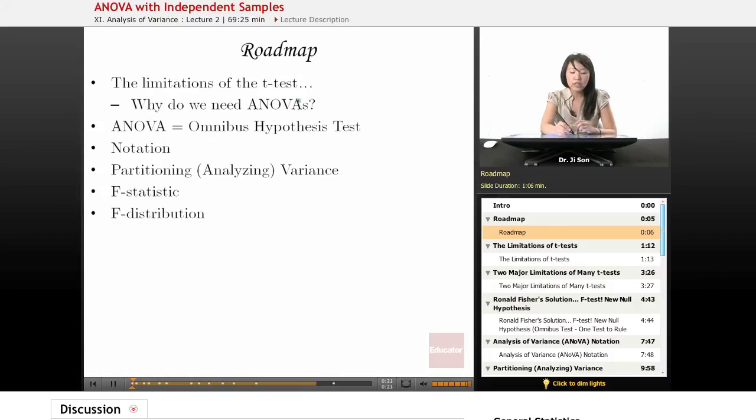An ANOVA is also called the analysis of variance, and it can be thought of as the omnibus hypothesis test. It's still a hypothesis test, just like the t-test, but it's the omnibus hypothesis test, and we're going to talk about what that means.